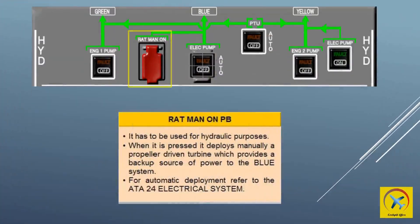RAT man on switch: when pushed, the ram air turbine extends. The RAT is located on the left bottom side of the fuselage and can be deployed for emergency use to pressurize the blue hydraulic system. The RAT can only be stowed on the ground. This switch is dedicated to pressurizing the blue hydraulic system only and does not provide emergency electrical power.